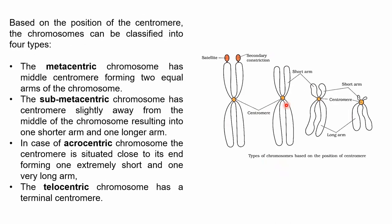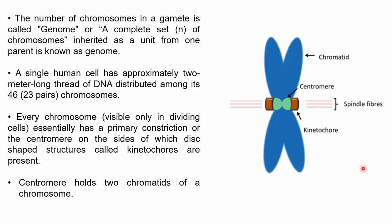Based on the position of the centromere, the chromosome may be divided into two arms. The centromere divides the chromosome into a shorter arm called the P arm (from the French word petite, meaning small) and a longer arm called the Q arm, or both arms may be equal.